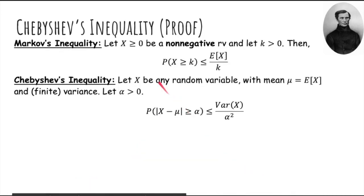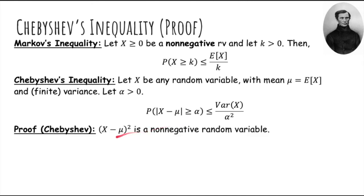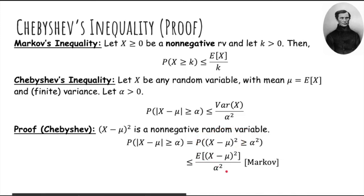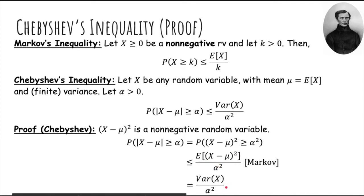Now let's use Markov's inequality to prove Chebyshev's inequality. Starting from the left side of Chebyshev's inequality, we use the fact that x minus mu squared is a non-negative random variable — anything squared is non-negative. We square both sides, and because x minus mu squared is non-negative, we can apply Markov's inequality to it. By Markov's inequality, we get the expected value of x minus mu squared divided by alpha squared. The numerator is just the definition of variance, so we replace it with the variance of x, and we've proved Chebyshev's inequality.